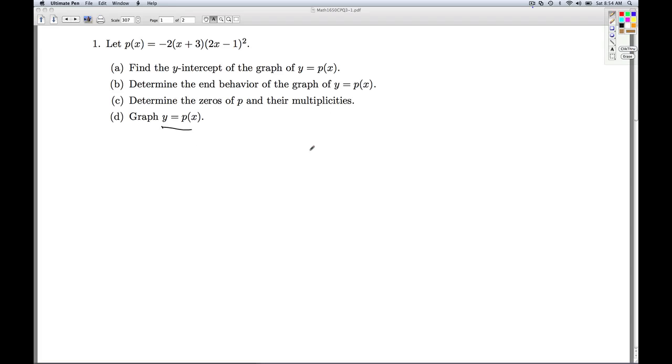All right, now it's time to graph this polynomial function. The Y intercept is zero negative six. The end behavior, we're going to start in quadrant two and finish up in quadrant four.